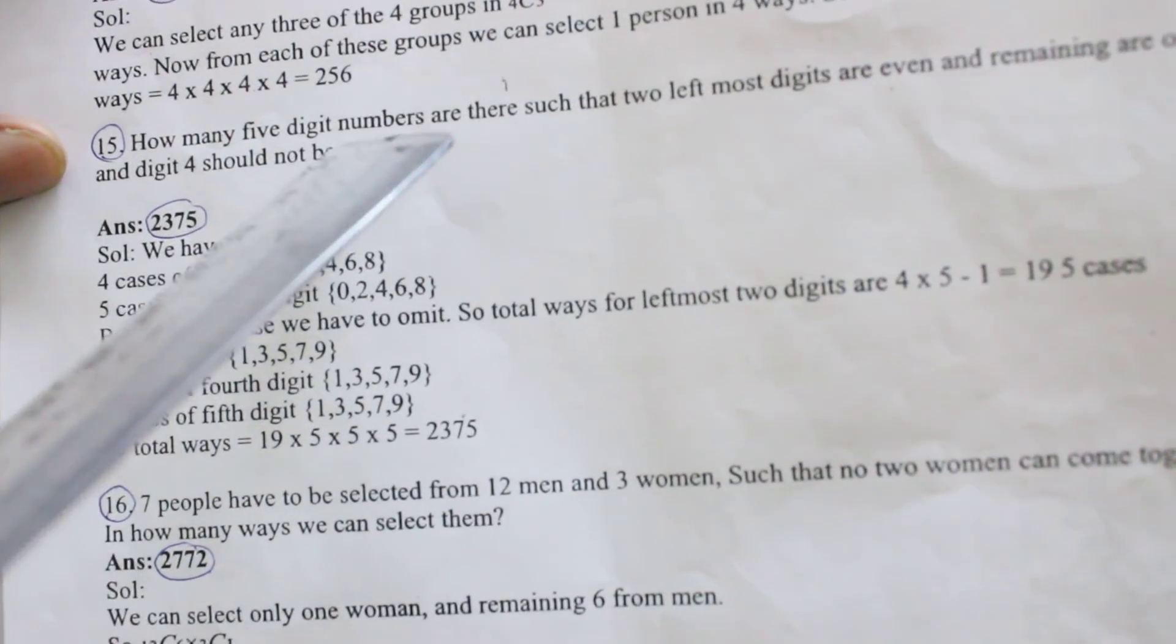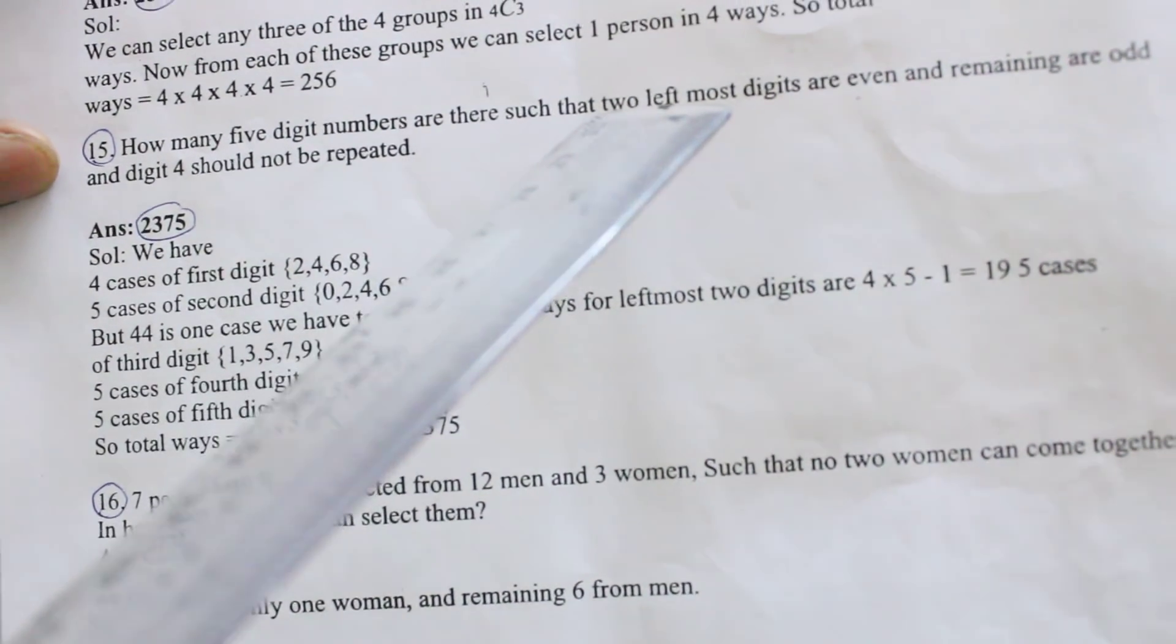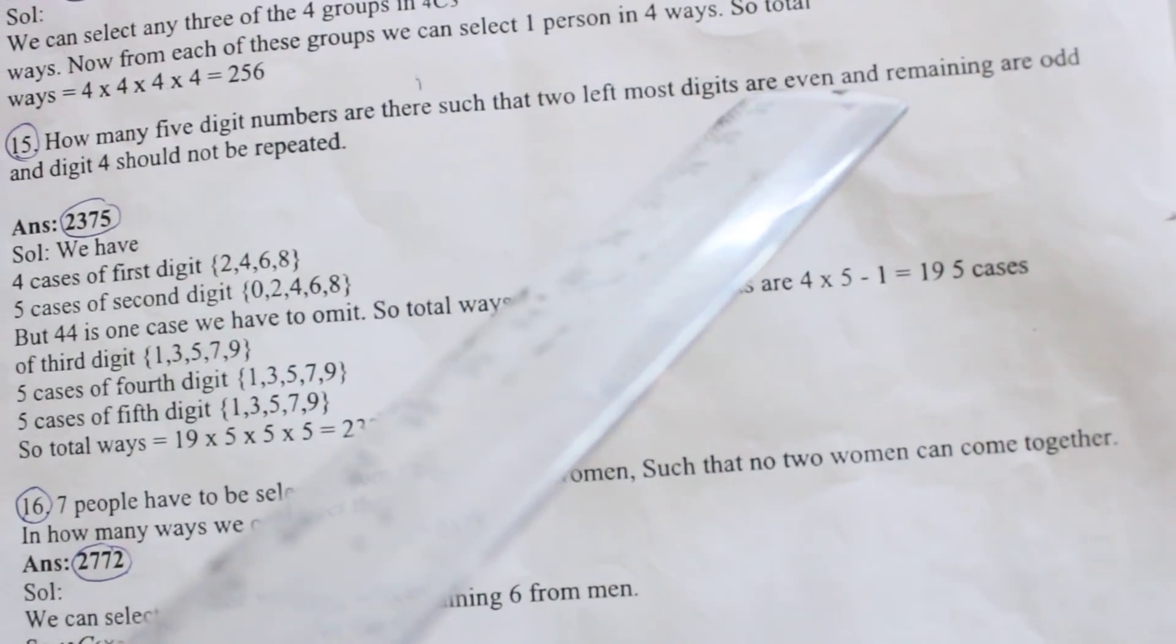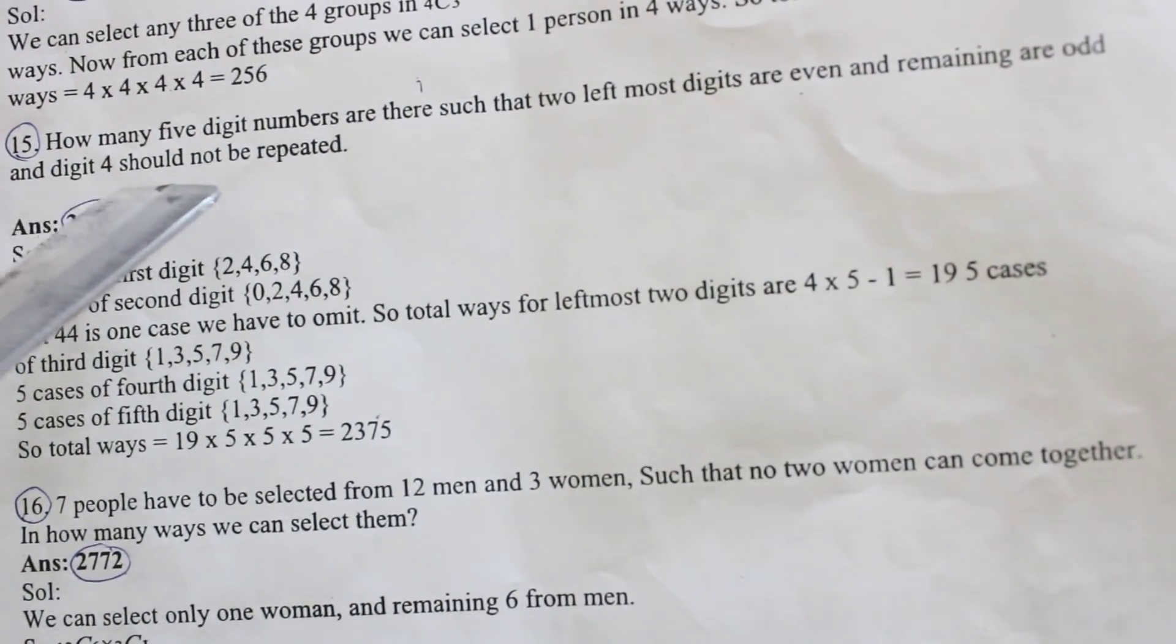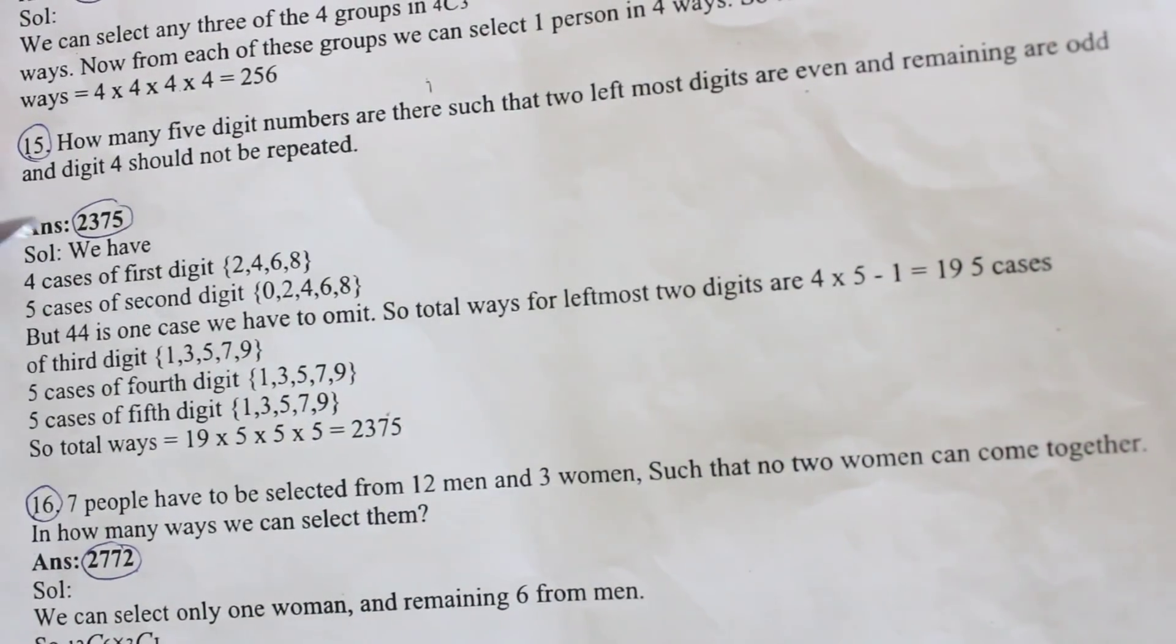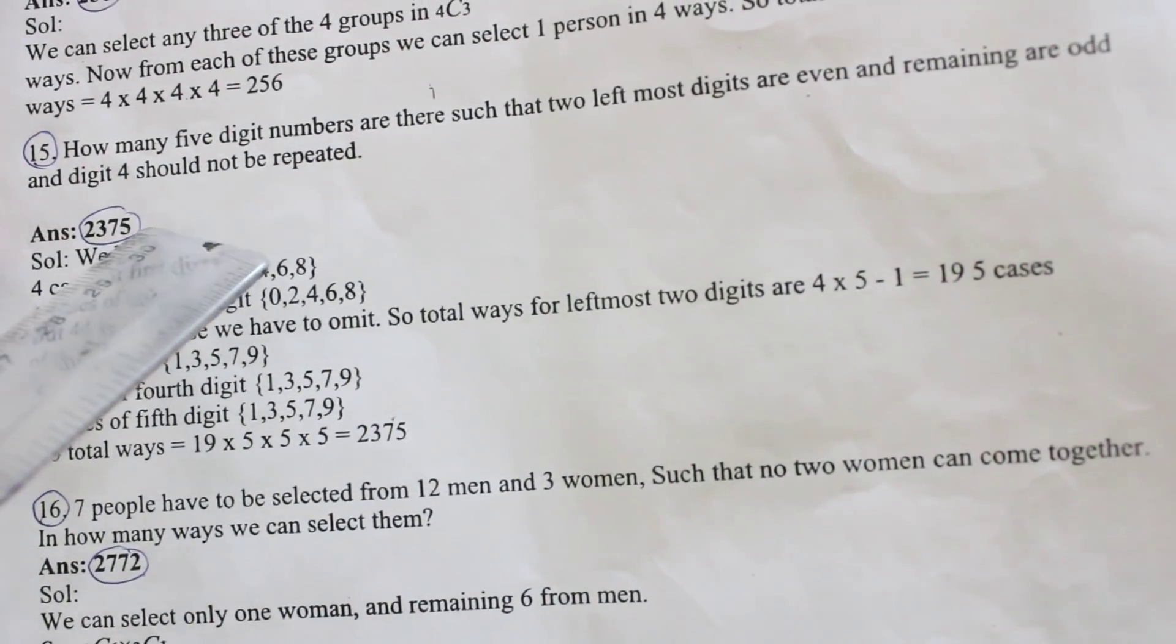15th one: How many 5 digit numbers are there such that 2 leftmost digits are even and remaining are odd and digit 4 should not be repeated? Answer is 2375.